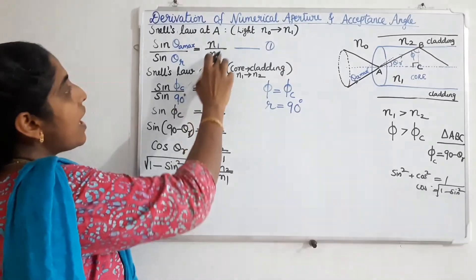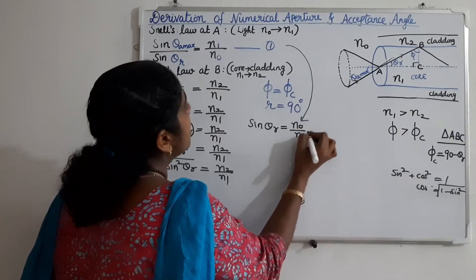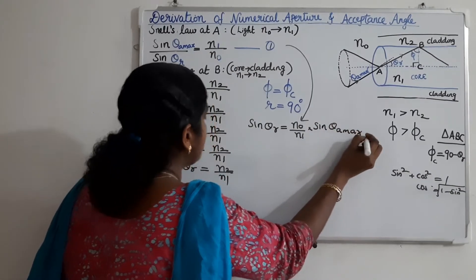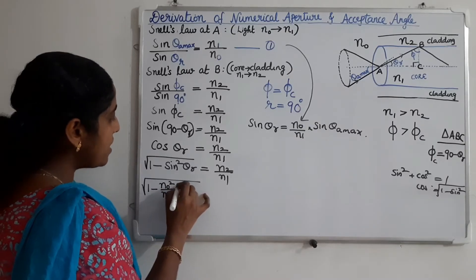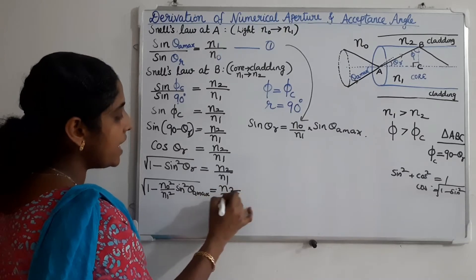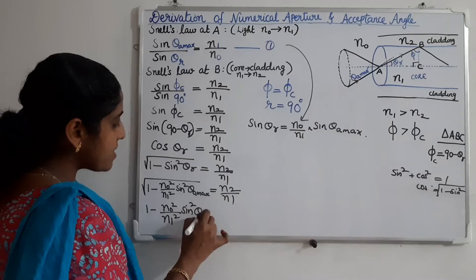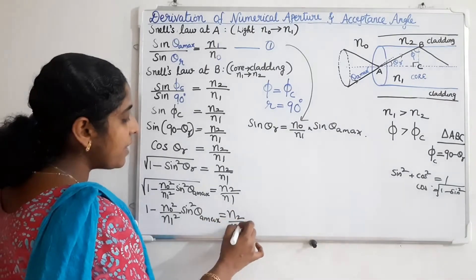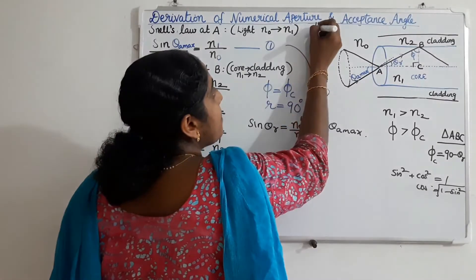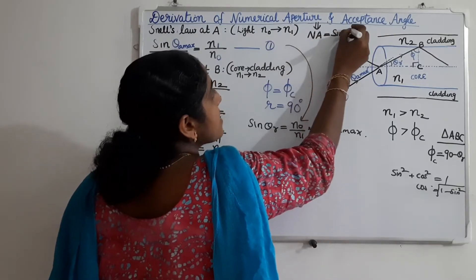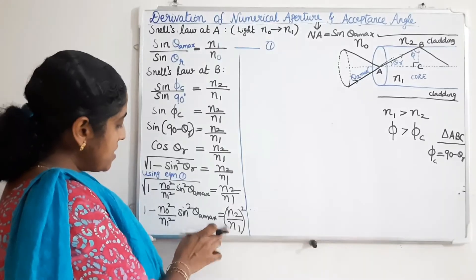Now we substitute for sine theta R from equation 1. From equation 1, sine theta R equals (N0 divided by N1) times sine theta A maximum. Substituting, we get: root of (1 minus (N0 squared over N1 squared) times sine squared theta A maximum) equals N2 divided by N1. Squaring both sides gives: 1 minus (N0 squared over N1 squared) sine squared theta A maximum equals N2 squared over N1 squared. Numerical aperture is defined as the sine of the maximum acceptance angle — the light-collecting capacity of an optical fiber.